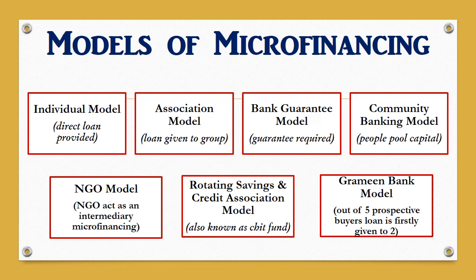The last type of model is the Grameen bank model, which is based on a group of five prospective borrowers. This model was developed in Bangladesh. Two of the five people are initially granted loans, and if these two pay back the loans within the given time period, then the other three are granted loans. The peer pressure from the other three members enables the smooth functioning of the system. These are the main models through which banks or financial institutions can give loans to clients.